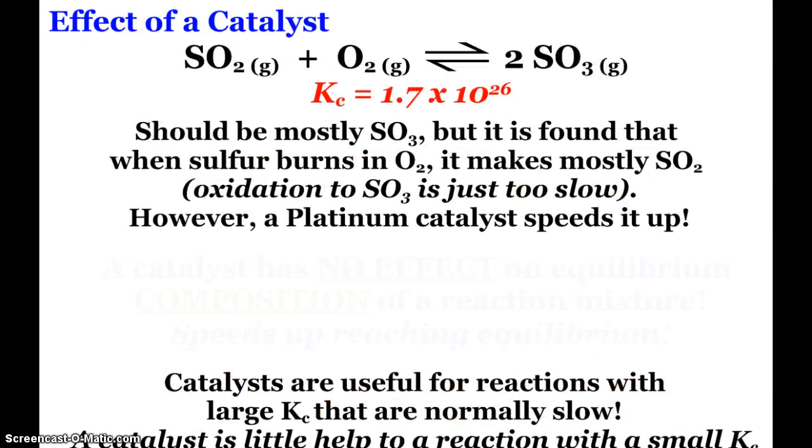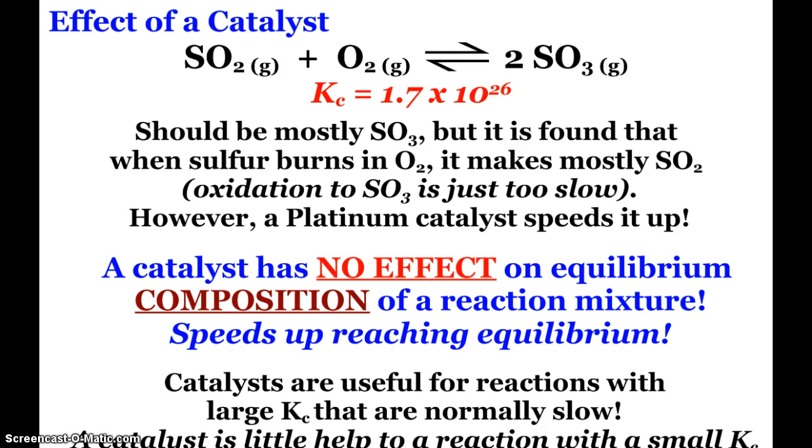And that takes us to our last part. Is there an effect of a catalyst? Here we see sulfur dioxide oxidizing to become sulfur trioxide. And so based on our KC value, 1.7 times 10 to 26, we expect that at equilibrium, we should mostly have sulfur trioxide. However, it's found that when sulfur burns in oxygen, it makes mostly sulfur dioxide. The oxidation is just too slow. So a catalyst can speed it up. A platinum catalyst speeds it up. What this catalyst is doing, it is not affecting the equilibrium composition, but it is affecting how fast it gets there. So a catalyst has no effect on the composition of the equilibrium. It just speeds up getting there.